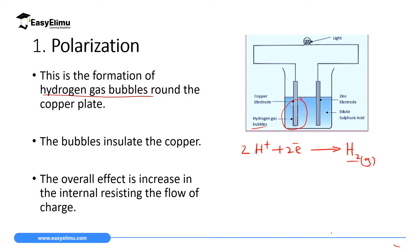The hydrogen bubbles surrounding the copper mean there is no direct link between incoming electrons and the copper electrode. This causes insulation and the overall effect increases the internal resistance of the circuit, decreasing the flow of current. After some time the bulb will go off because the hydrogen produced acts just like an insulator at the copper electrode.